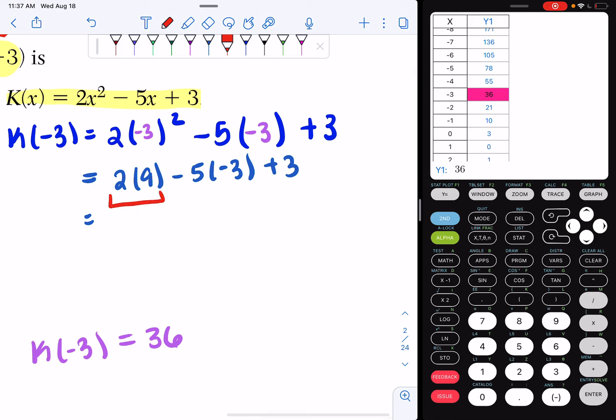2 times 9 is 18. Negative 5 times negative 3 is a positive 15. And then I add my 3. 18 plus 15 is, well, 18 plus 18 is 36. Take away 3, so 33. So I have 33 plus 3, which is going to be equal to 36.